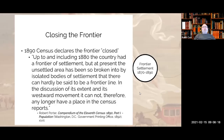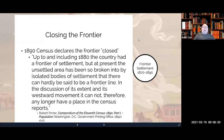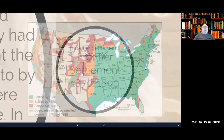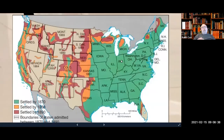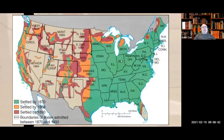What he is responding to is a report from the Census Bureau that the frontier is closed. The census is done every 10 years — it's in the Constitution — and the purpose of the census is to discover where everybody in the United States lives. The purpose of that is to decide representation, because there are only so many representatives and they have to be divided among the whole population.